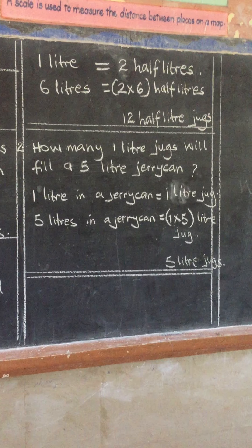Number two: how many one-liter jugs will fill a 5-liter jerry can? Here we say that one liter in a jerry can equals one liter jug. So five liters in a jerry can will equal 1 times 5, giving us the answer of five liter jugs.